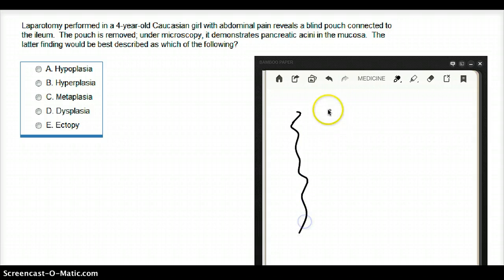Imagine this is our ileum and the blind pouch connected to it. The pouch is removed for microscopy and demonstrates pancreatic acini in the mucosa. The latter finding would be best described as which of the following?